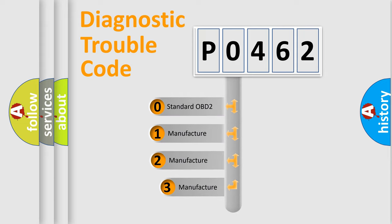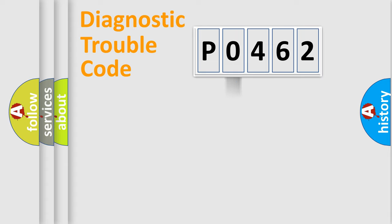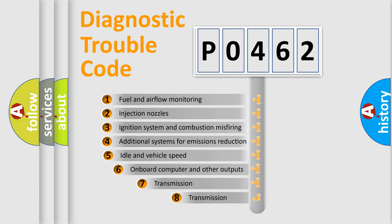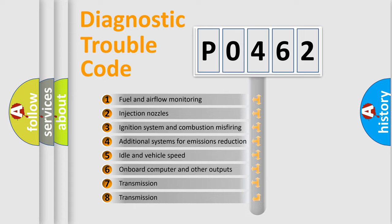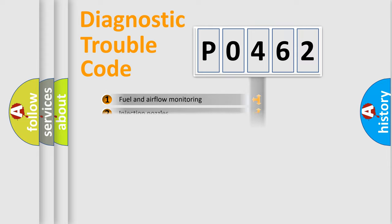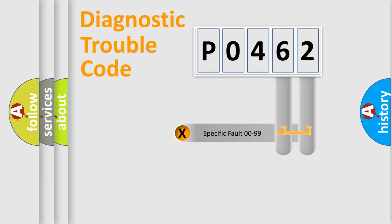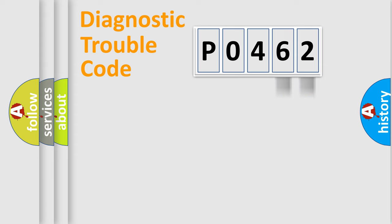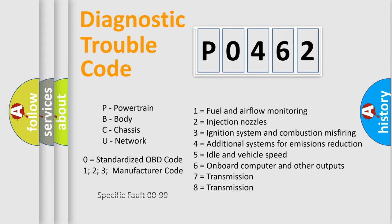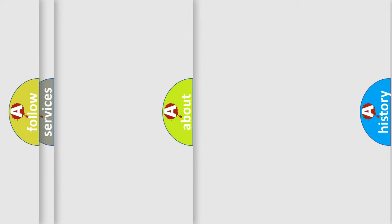If the second character is expressed as zero, it is a standardized error. In the case of numbers 1, 2, or 3, it is a more specific expression of a car-specific error. The third character specifies a subset of errors. This distribution is valid only for the standardized DTC code, and only the last two characters define the specific fault of the group. Such a division is valid only if the second character code is expressed by the number 0.